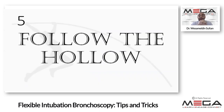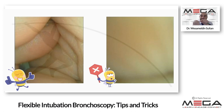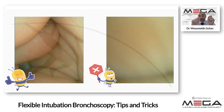Number five: follow the hollow. Keep yourself always in a space and do not touch soft tissues. Once you touch soft tissues, you will obscure your vision. If you do touch tissue, try to withdraw the bronchoscope a little bit backward to get an overview, and then advance it again. Always follow the hollow and stay in the space.